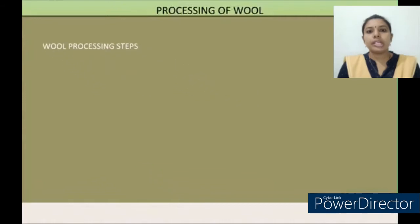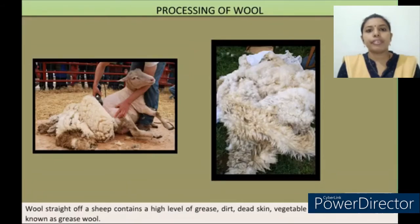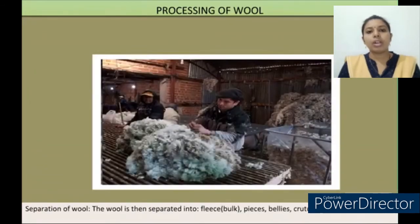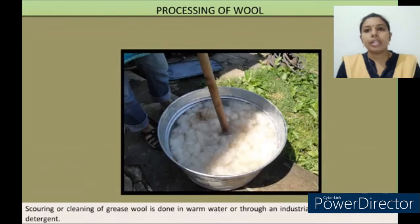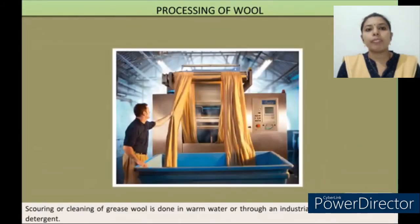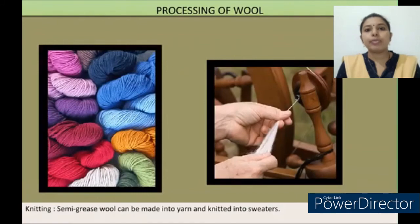Processing of wool: Shearing is the process of removing wool from the sheep using a shearing machine. Wool straight off a sheep contains a high level of grease, dirt, dead skin, vegetable matter, and lanolin, and is known as grease wool. The wool is then separated into fleece, pieces, bellies, crutchings, and locks. Scouring or cleaning of grease wool is done in warm water or through an industrial process using alkali and detergent. Chemical carbonization is the removal of vegetable matter from wool by chemical process. Semi-greased wool can be made into yarn and knitted into sweaters.